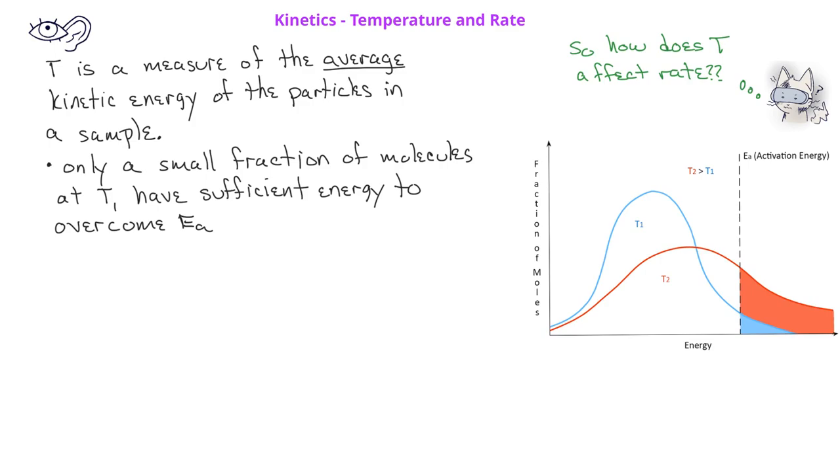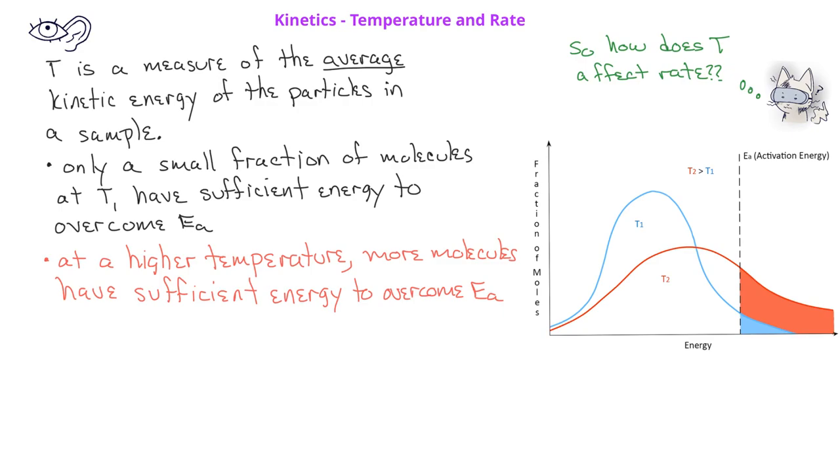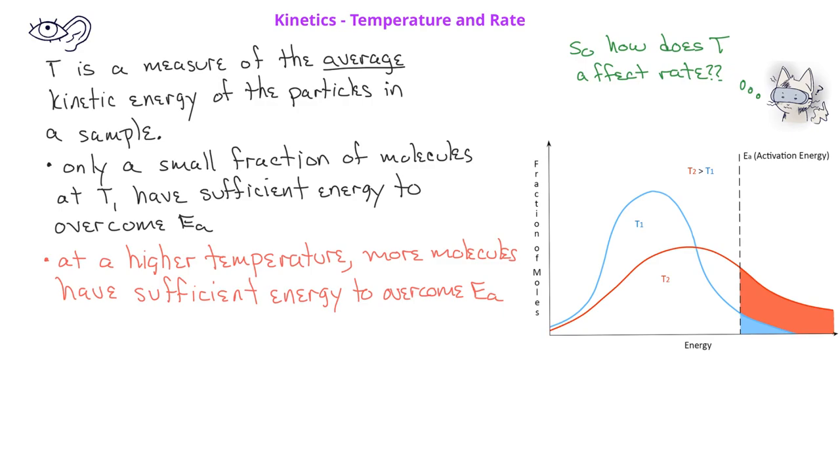At a higher temperature, indicated in red, we see that there are more molecules that have sufficient energy for a reaction to take place and to overcome the activation energy. This means that more molecules have sufficient energy, and since more molecules have sufficient energy, the reaction will take place at a faster rate.